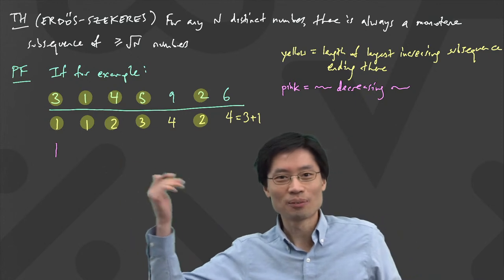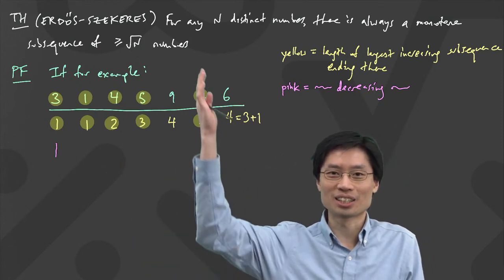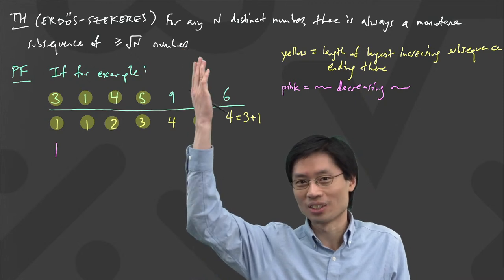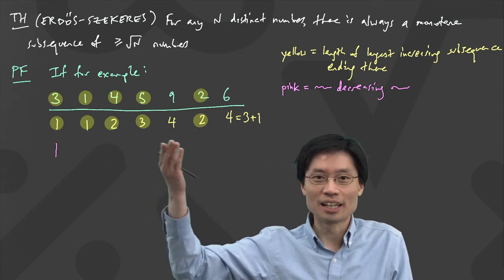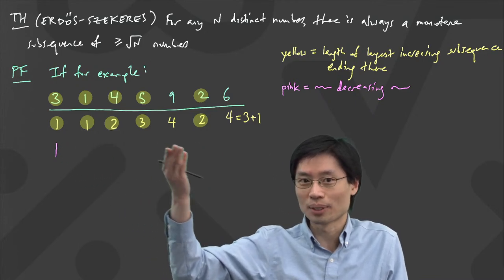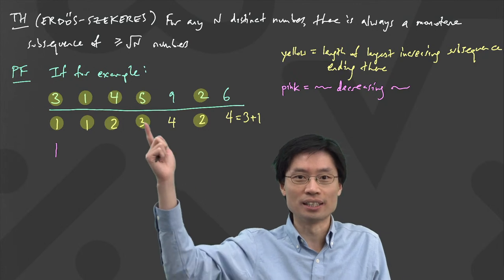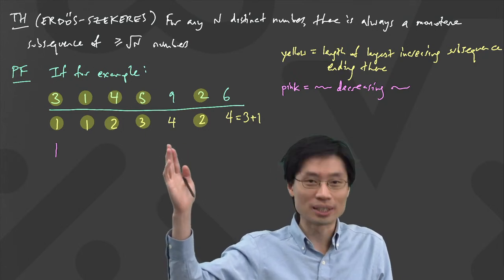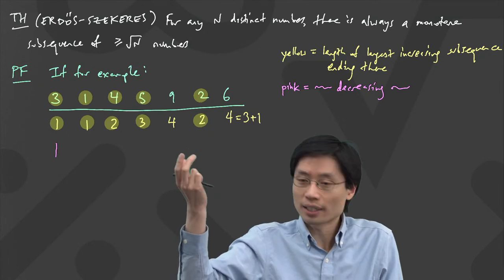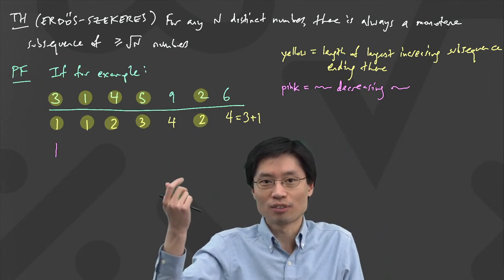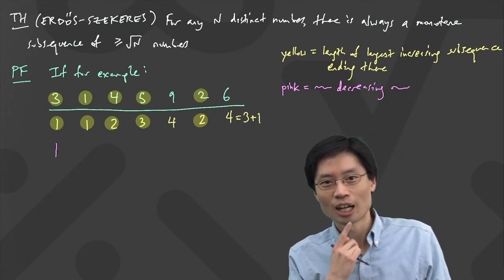Why did we do this? We did this for two reasons. One is: if I'm trying to find out that there's a long increasing path or a long decreasing path, it's pretty useful if I could somehow know that this table had some big numbers in it. Because look — there's a four here. If you have a four here, there exists an increasing subsequence of length four. How do you do the decreasing?